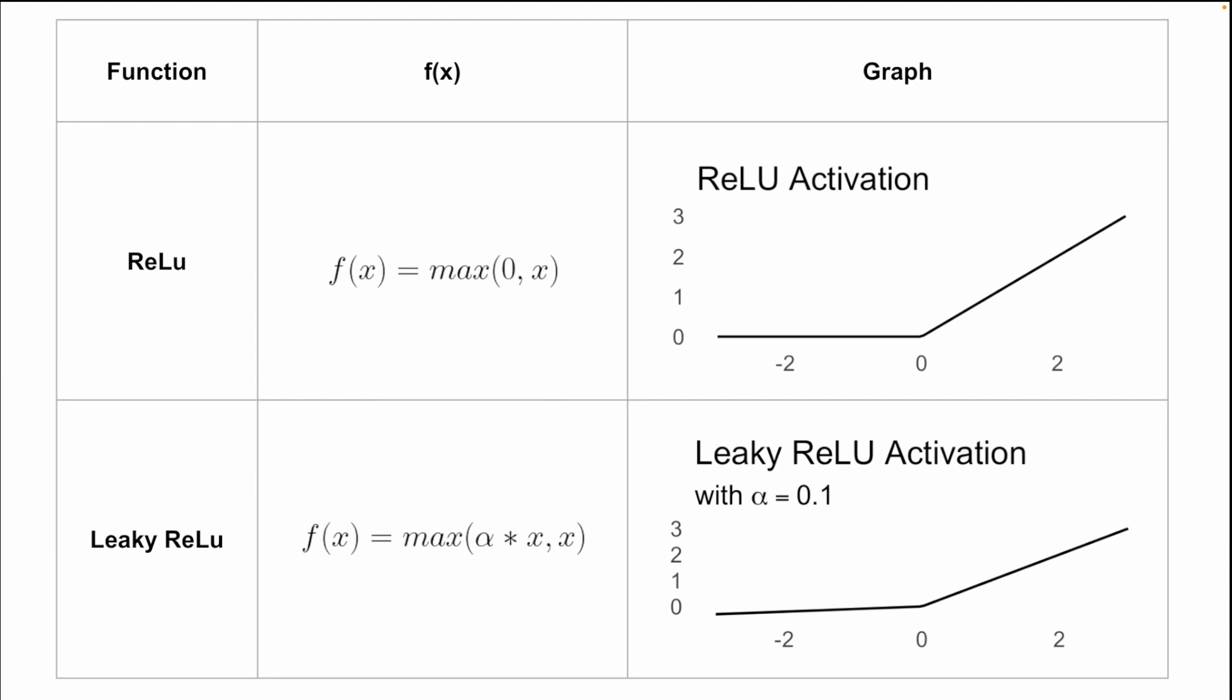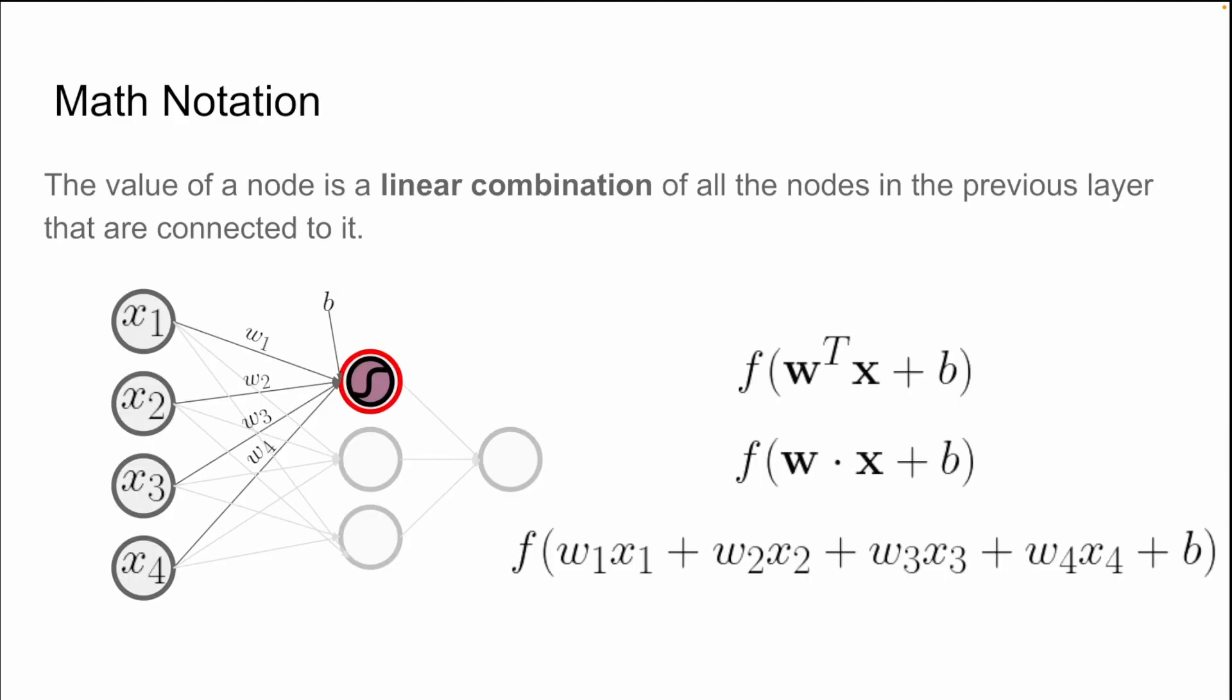This basically reduces the impact of that number without driving it to exactly zero. We can apply activation functions to any of our nodes. Previously, we said the value of this node was going to be all of the input values times their respective weights, plus a bias. And that's still true, but on top of that, we are going to apply an activation function, represented by this f of all of that input. This means that we take that previous value that we calculated and send it through some type of activation function. Maybe a ReLU, maybe a sigmoid, maybe a tanh. Then that value is what gets sent through to the next layer of the neural network.